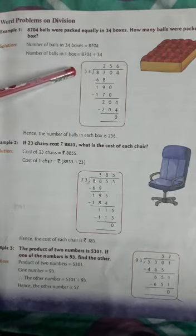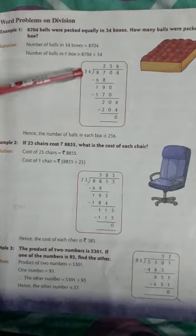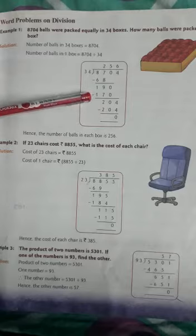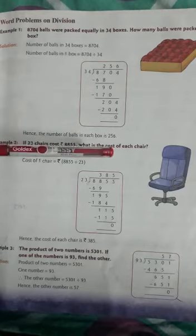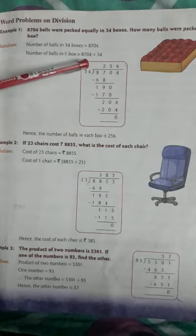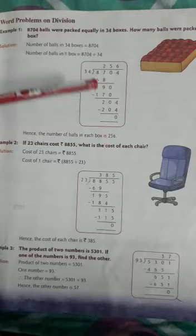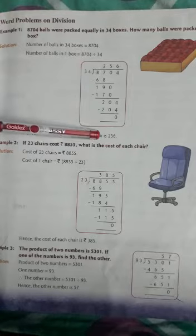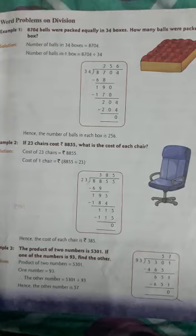Now, 34 into 204. 34 times 6 is 204. Ok students, now we will write the answer. Hence, the number of balls in each box is equal to 256.